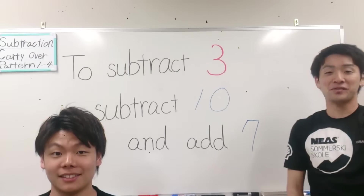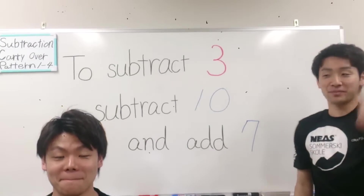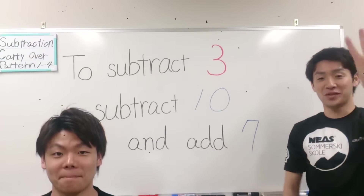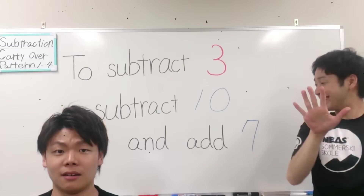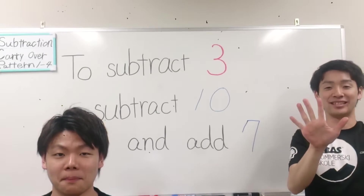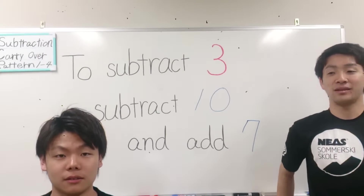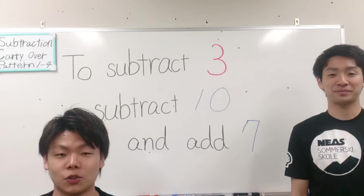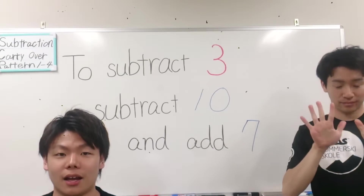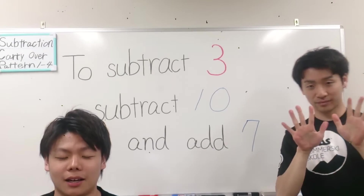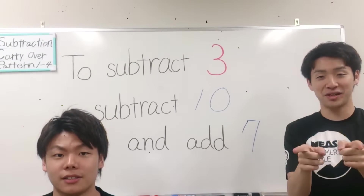Subtraction carryover pattern 3: 2, subtract 3, subtract 10, and add 7. Repeat that to me: 2, subtract 3, subtract 10, and add 7. Let's check the VTR.